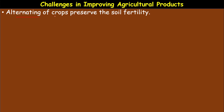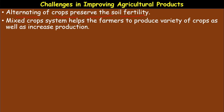Alternating crops preserves soil fertility, because all crops do not require the same kind of nutrients. When we change the crop each season — for example, growing groundnut one season and another crop the next season — this replenishes the soil minerals. The mixed crop system is a modern method that helps farmers produce a variety of crops as well as increase production.